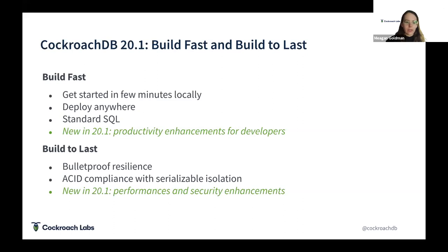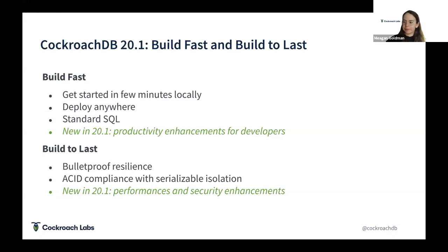The second part of the main theme is 'Build to Last.' CockroachDB has what we like to call bulletproof resilience built into the database — it can survive outages — and we're also proud of the fact that CockroachDB has complete ACID compliance, so data is always consistent and correct. In 20.1 we focused a lot on updating our multi-region performance so we can perform even better within multi-region settings, and we also tightened up the database's security. That's an overview of what we had in 20.1.